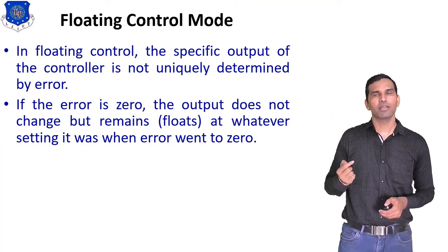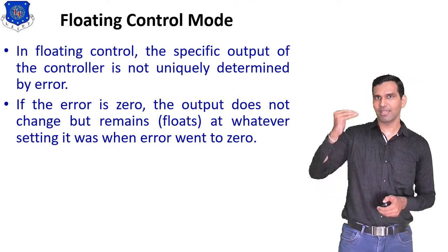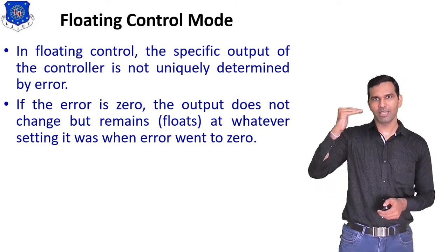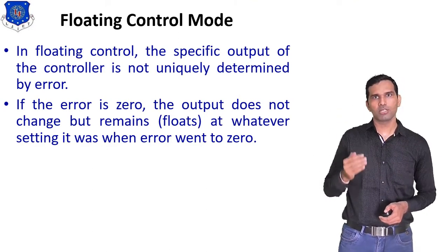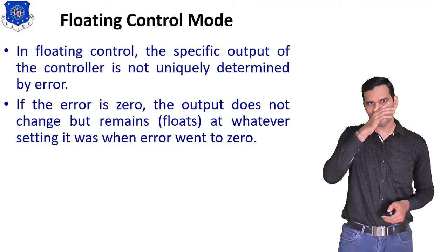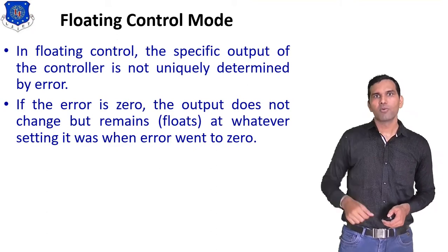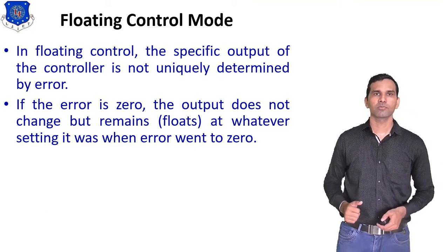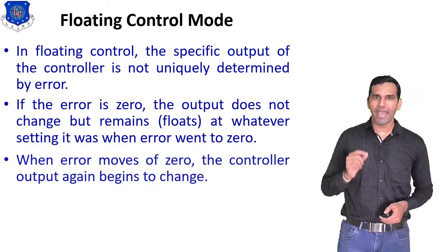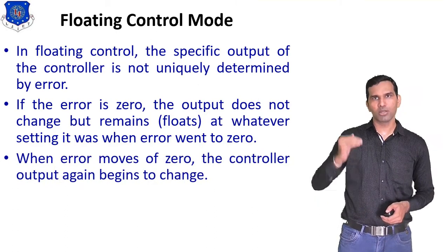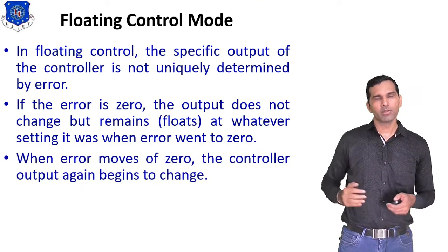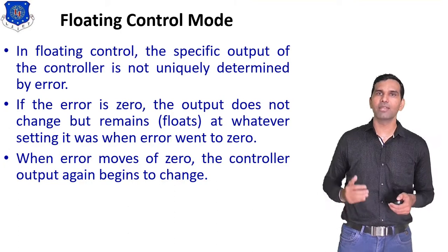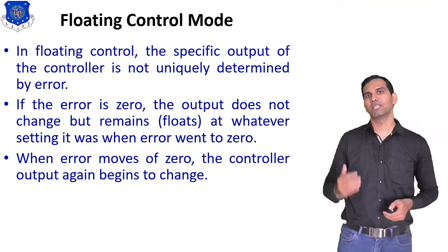The output remains at its previous position — whatever setting it was at when the error went to zero. This is the operation of floating control mode. When error moves away from zero, the controller output again begins to change.